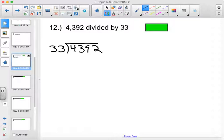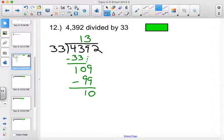4,392 divided by 33. 33 goes into 43 one time. 1 times 33 is 33. Subtract and you end up with a partial product of 10. Bring down your nine. 33 into 109 will be three times. 3 times 33 is 99.